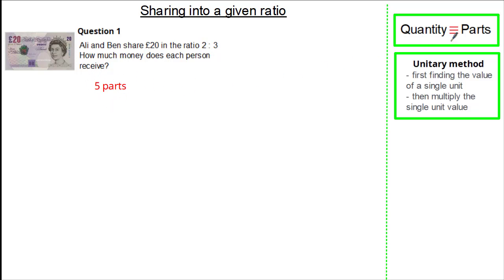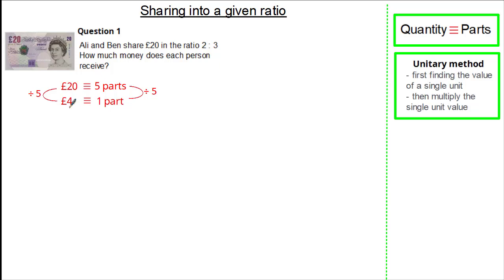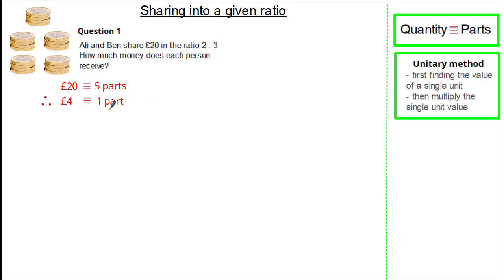Now we need to identify what the total parts are equivalent to. We know 5 parts is equivalent to £20. Using the unitary method, we divide by 5 to give us 1 part. We do the same to the £20, so 20 divided by 5 is £4. This means we know £4 is equivalent to 1 part.